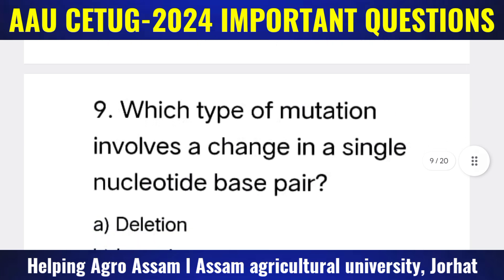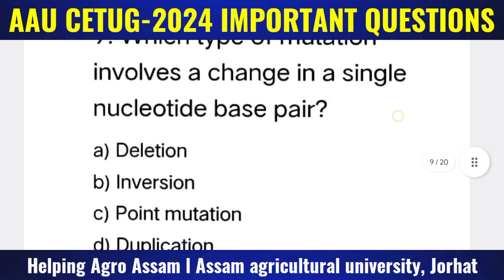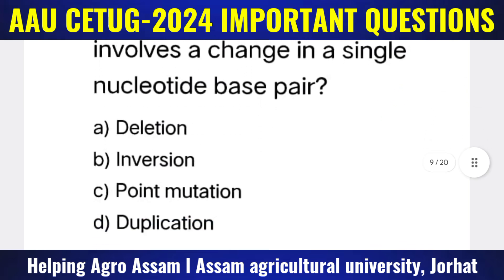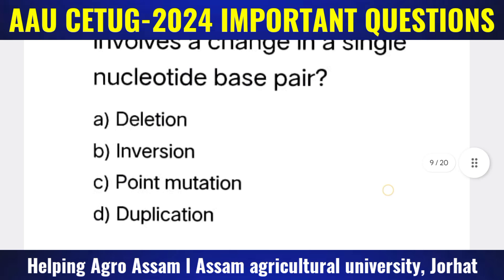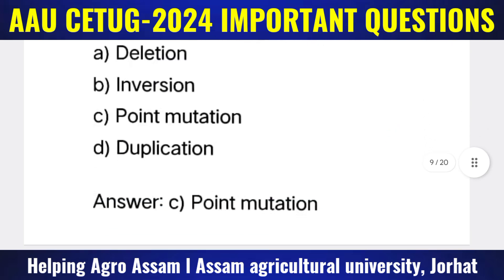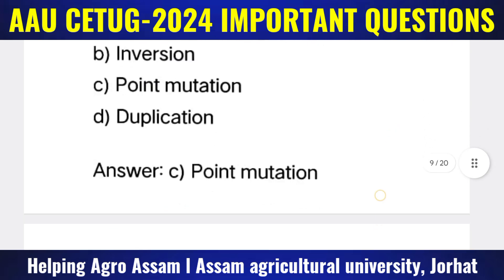Question 9: Which type of mutation involves a change in a single nucleotide base pair? Options: (A) Deletion, (B) Inversion, (C) Point mutation, (D) Duplication. The correct answer is option C — point mutation.